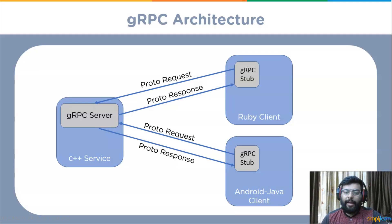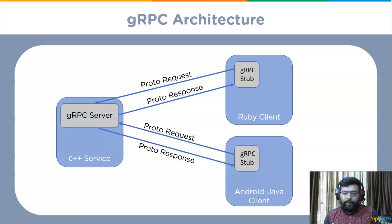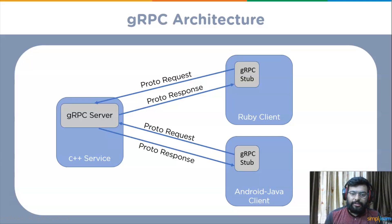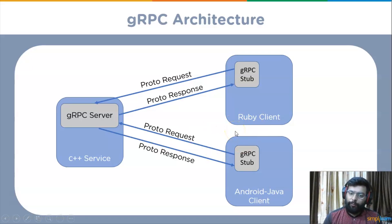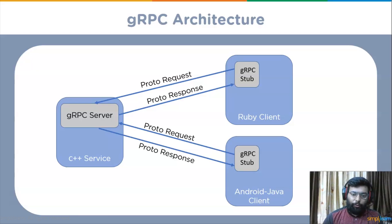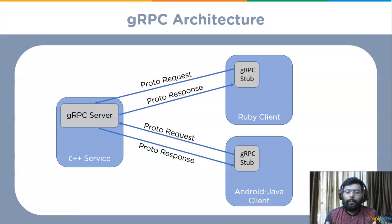The OS makes a call to the remote server machine via HTTP/2 protocol. The server's OS receives the packets and calls the server stub procedure, which decodes the received parameters and executes the respective procedure invocation using protobuf. The server stub then sends back the encoded response to the client transport layer. The client stub receives the result message, unpacks the return parameters, and the execution returns to the caller.